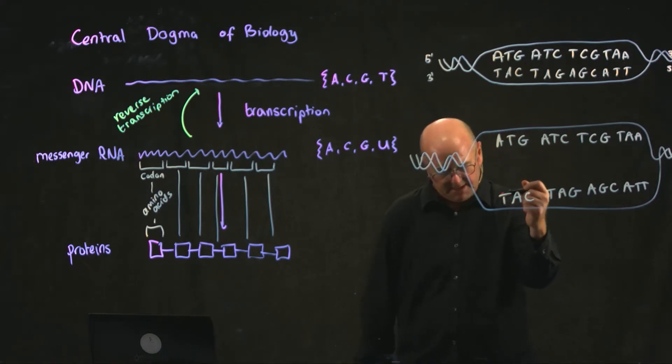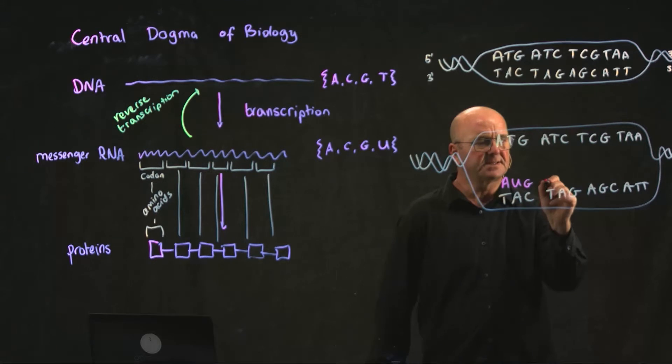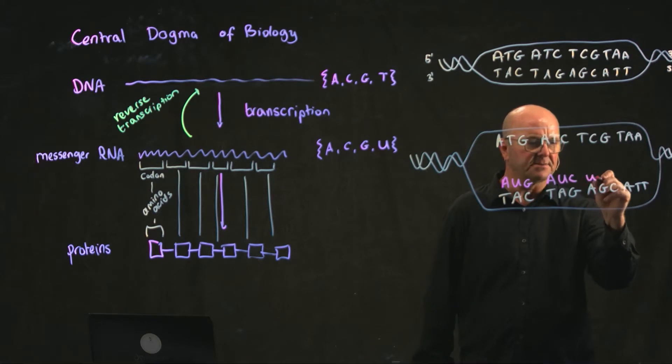And now I get RNA made, and RNA is made using what's called the template strand right here. So the RNA here, when there's a T it puts an A. When there's an A it puts a U. When there's a C it puts a G. When there's a T it puts an A. When there's an A it puts a U. When there's a G it puts a C, and so on.